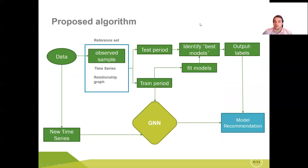The pipeline is pretty widespread and common. We have a reference set with time series data and relationship graph. We split time series into train and test period and with that we basically identify the best models for a particular time series sample. Thus, we have a time series and associated best model label for each time series sample. With these labels we can train GNN which will provide a model recommendation based on new time series data.